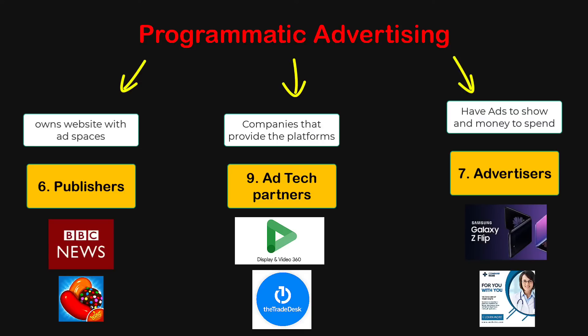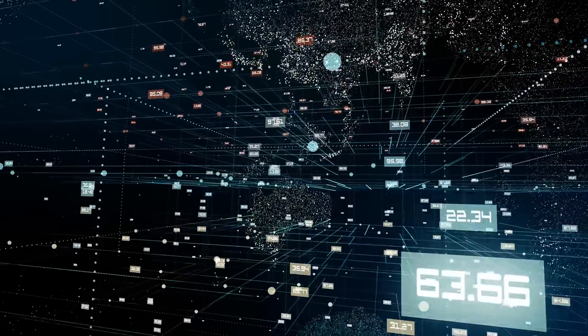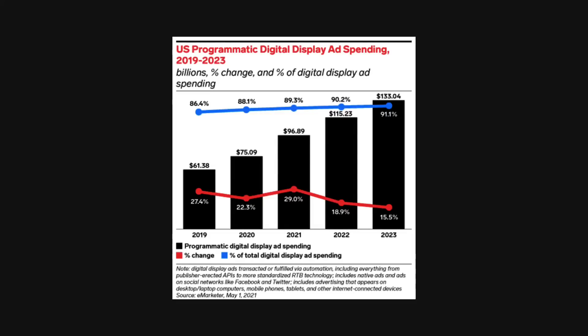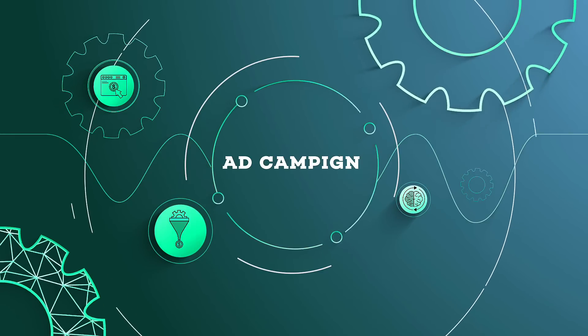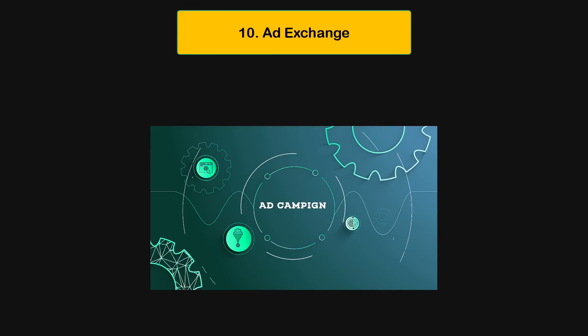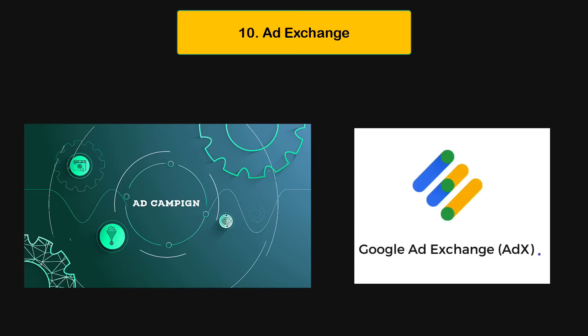Ad tech companies handle payments and enable deals between advertisers and publishers, and there needs to be no prior connection or relationship between the advertiser and publisher. An advertiser based in India can literally book ad inventory on a website based in the US or Africa. To give you an idea of scale, using programmatic advertising nowadays, every second millions of advertisers buy inventory on millions of publisher properties.